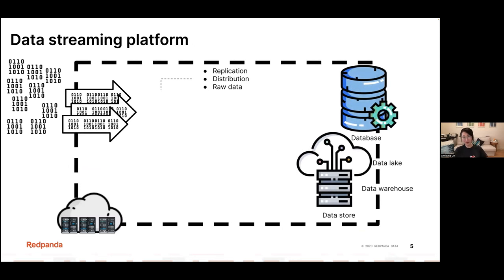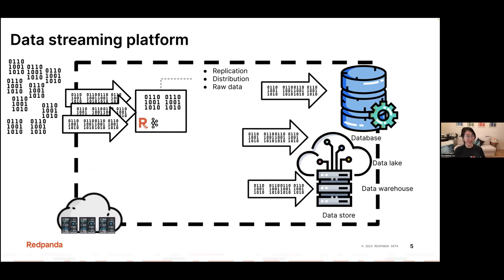Before we dive into the architecture, here's a quick overview of what we do as a data streaming platform. Red Panda is a C++ implementation of Kafka — a drop-in replacement. The client side doesn't need to change anything because we are Kafka API compatible. The difference is that C++ gives us much better access to lower-level CPU and memory management. We bypass JVM garbage collection overhead and control thread context-switching, which avoids costly CPU delays.